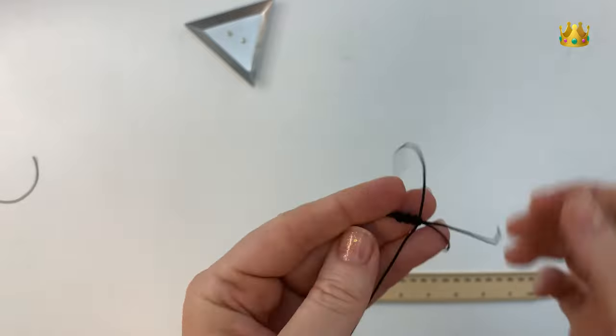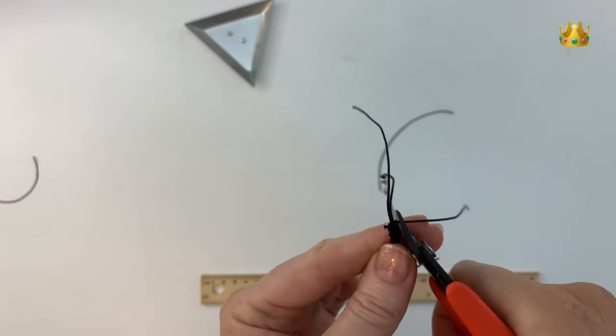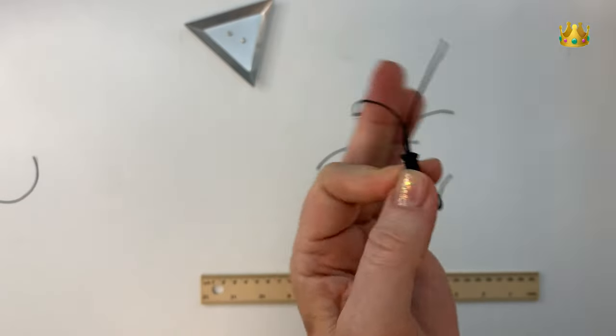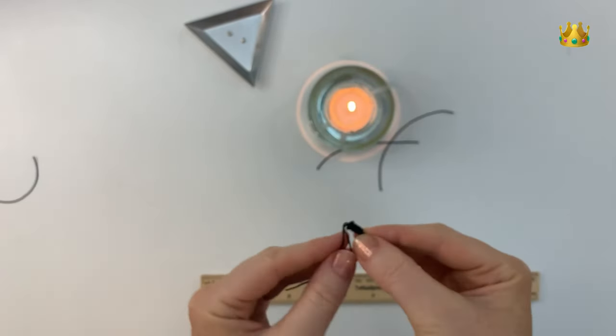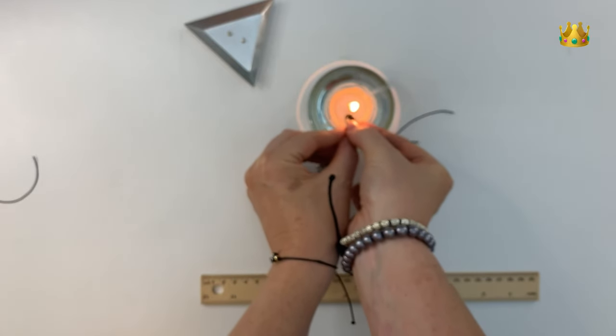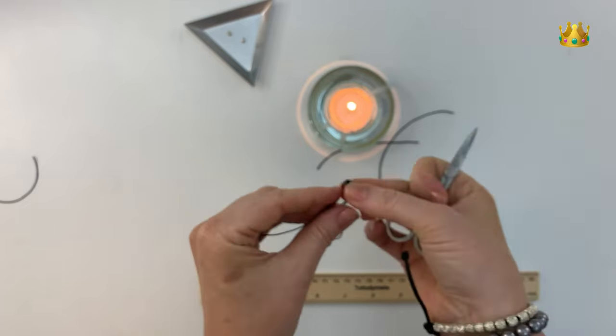Once you're happy with the size of your sliding knot, then you can cut these little tails off quite short and just melt the ends, singeing them with a lighter. Being careful not to melt the actual knot. So I just singed the ends to melt them, and then tap them with the scissors to fuse them onto the knot.